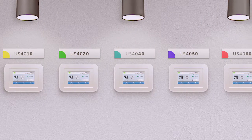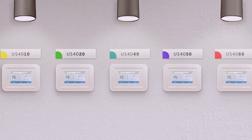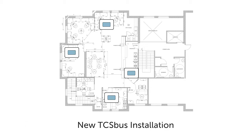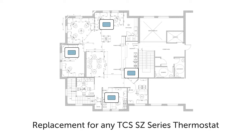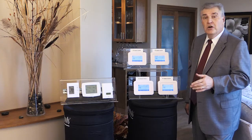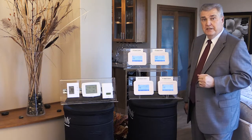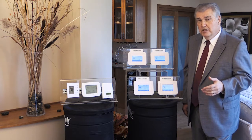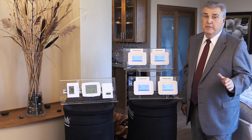This means that the Ubiquistat can be used in a multitude of ways: in the standalone mode, on any BACnet system — including our new Ubiquity Cloud Platform — on a new TCS bus installation, or as a replacement thermostat on an existing TCS system while still using your existing gateways. We built the Ubiquistat with a versatile touchscreen, easy product selection, and multiple communication protocols for the ultimate in flexibility.